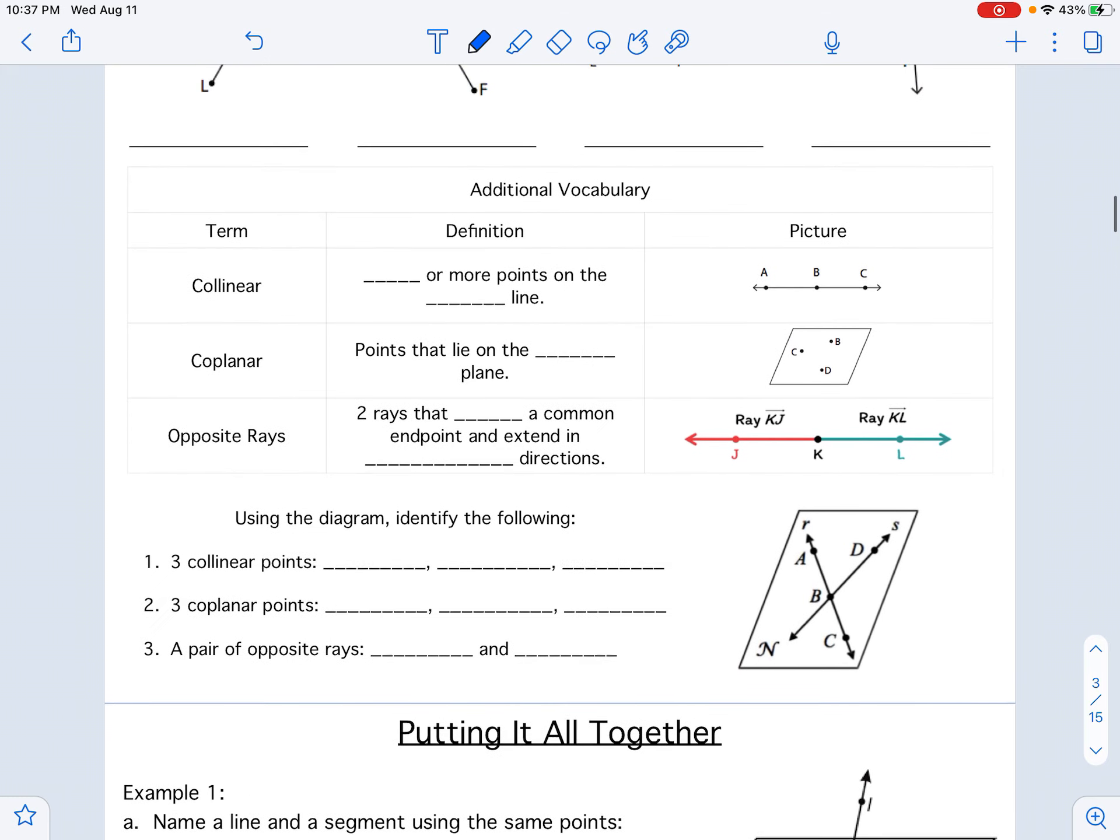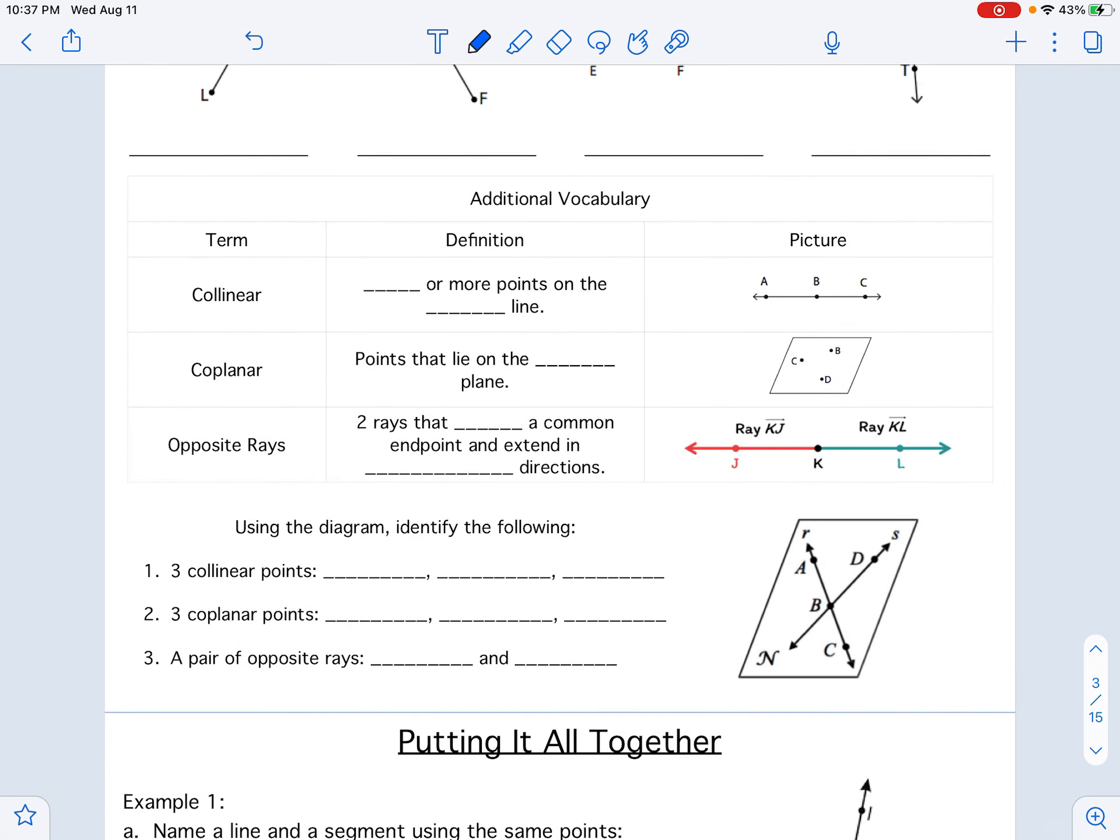Here's some additional vocabulary that we have. We have collinear. That is when you have two or more points on the same line. Co meaning, you know, with and linear meaning line. So three or more points on the same line. Because any two points can make a line. So any two points will always be collinear. So three or more points though on the same line. So here we have A, B, and C are collinear.